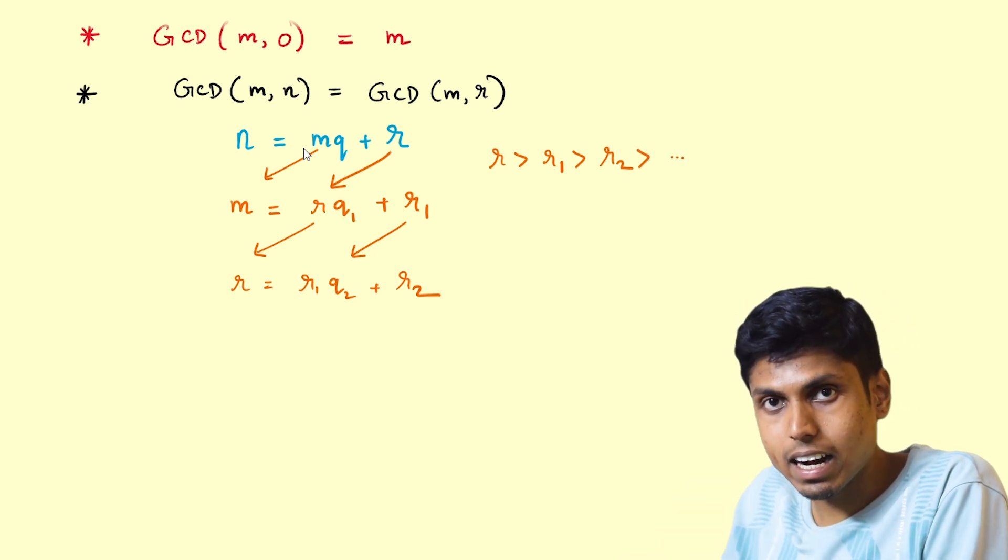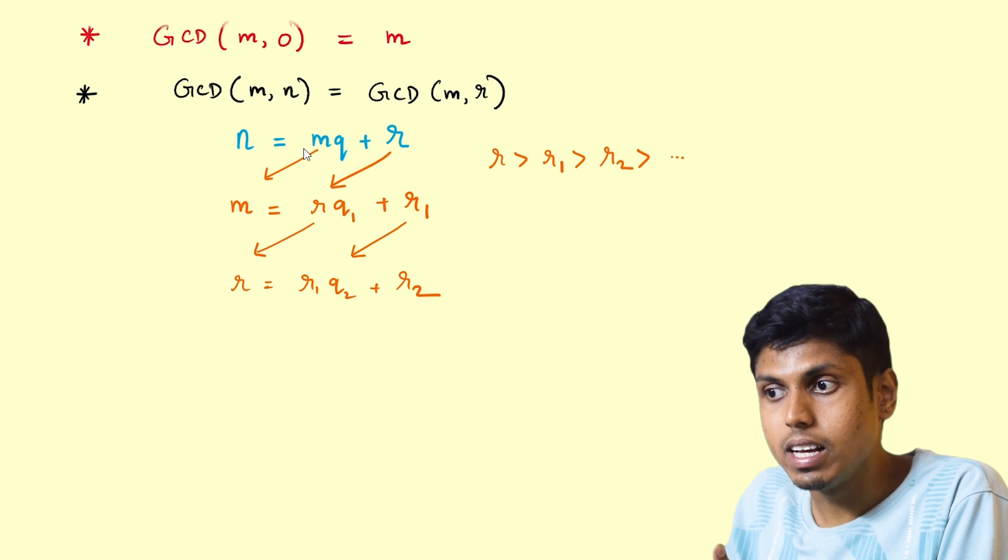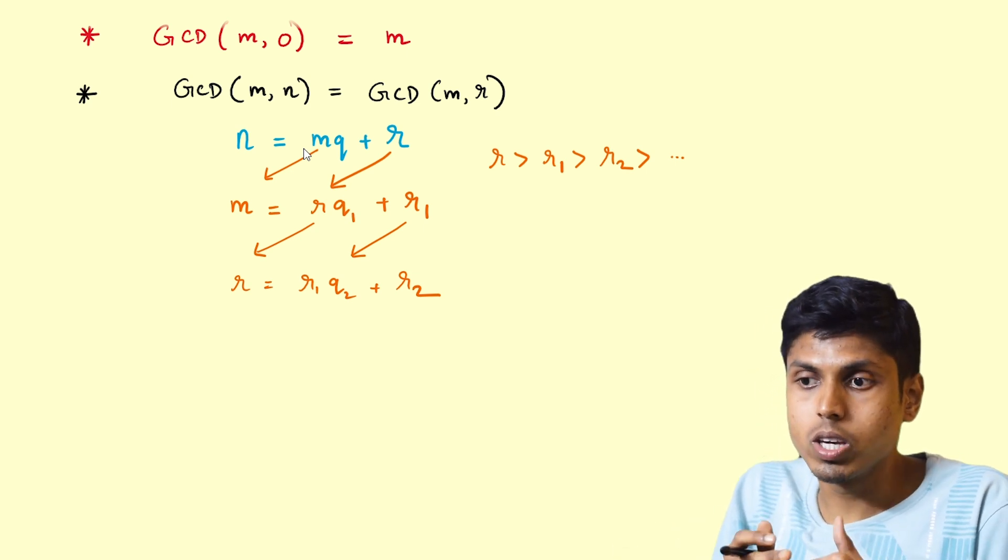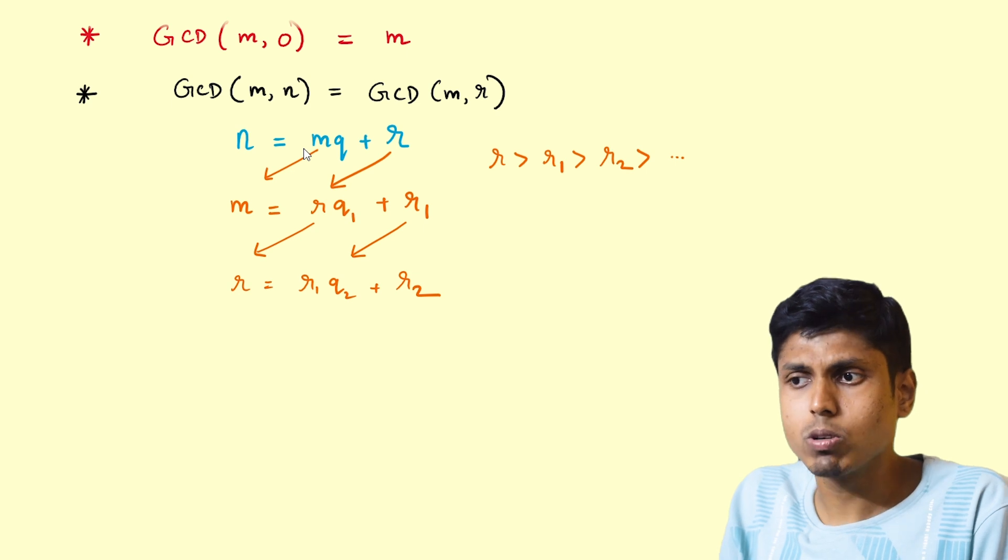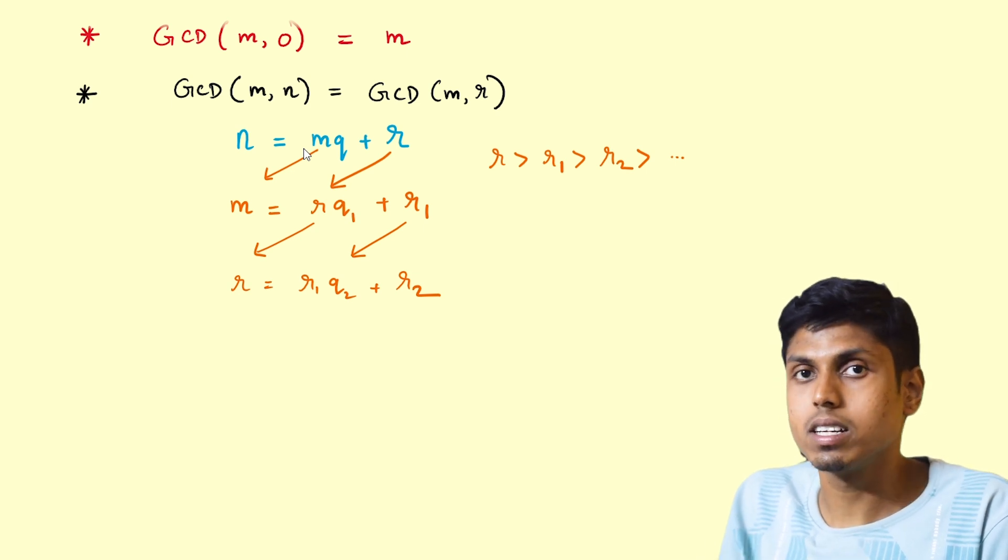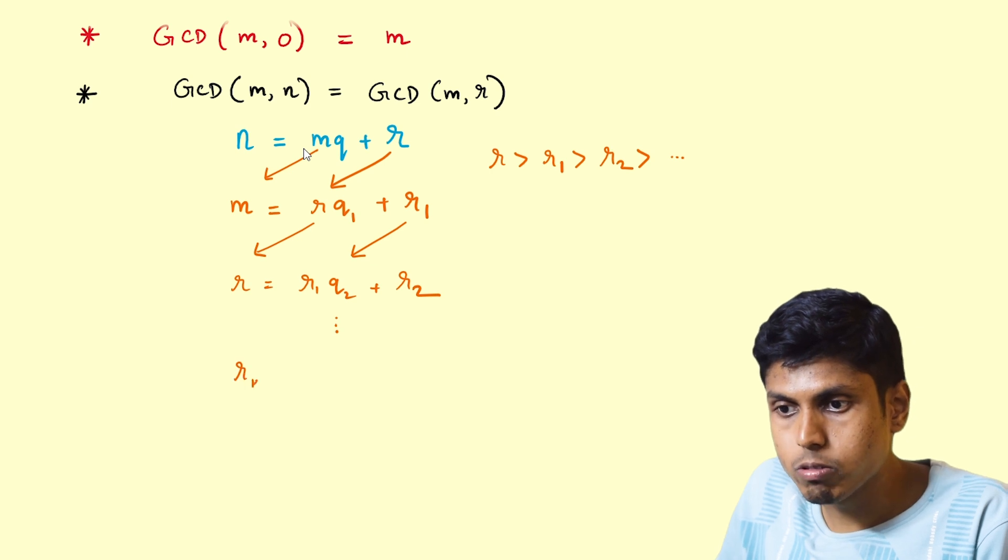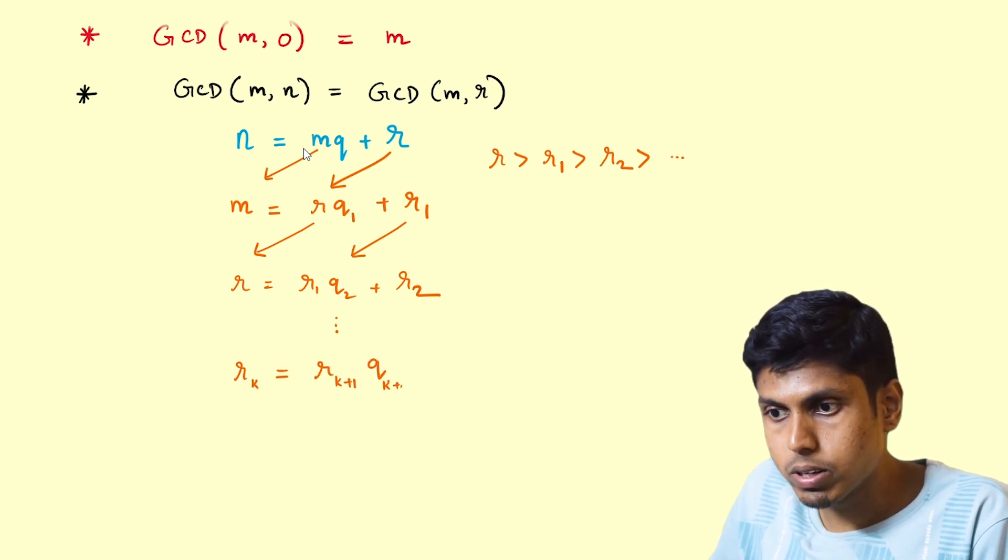You can keep on descending the ladder of natural numbers like this, but eventually you should reach the end or you will be reaching the number zero, because the set of natural numbers less than r is finite. So as you continue this procedure, at some point of time you will get rk equals rk plus 1 times qk plus 2 plus 0.